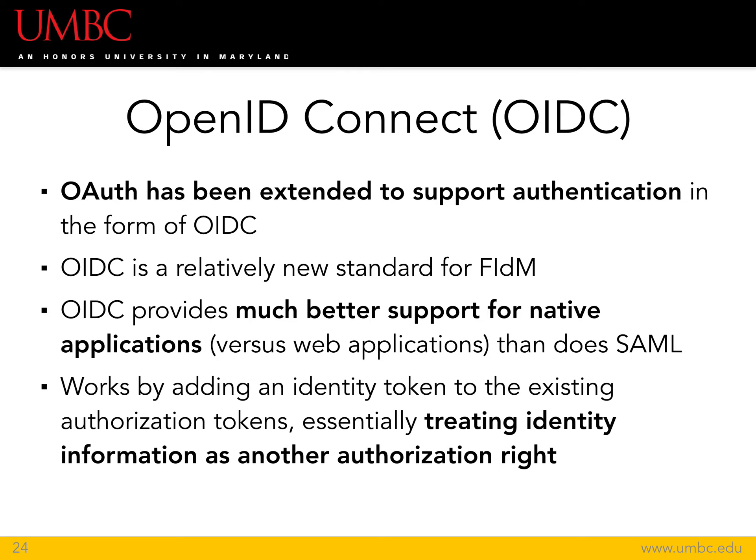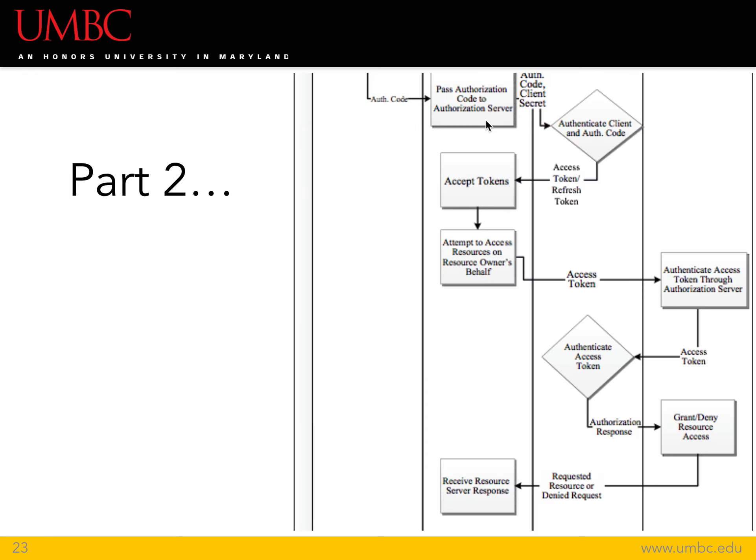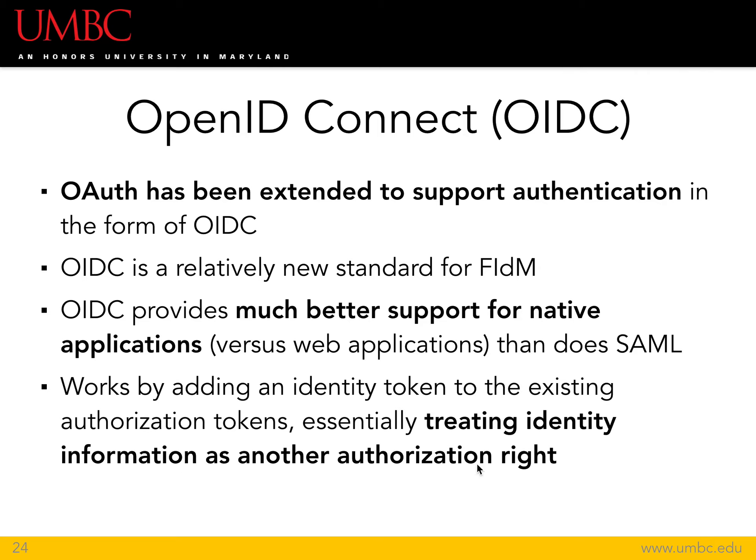OAuth has actually been extended to support authentication in the form of OpenID Connect. This is a relatively new standard for federated identity management that provides much better support for native applications — meaning desktop or mobile applications rather than web applications — because a desktop application isn't going to have access to browser cookies. The whole idea of checking whether someone is currently logged into a browser, which SAML has relied on, does not work for native code applications on a phone. OpenID Connect adds an identity token to the existing authorization token, treating identity information as just another form of authorization.